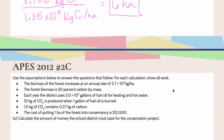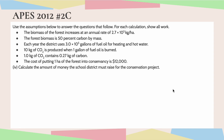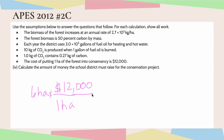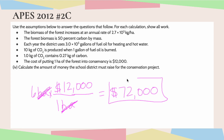Let's move on to part four. Part four says calculate the amount of money the school district must raise for the conservation project. If it needs to conserve six hectares of forest, and we know that the cost of putting one hectare of forest into conservancy is $12,000, I'm simply going to take my six and multiply it by 12, canceling out my hectares, to get $72,000. That represents the amount of money the school district will have to raise to conserve the appropriate amount of forest to offset their carbon dioxide emissions.